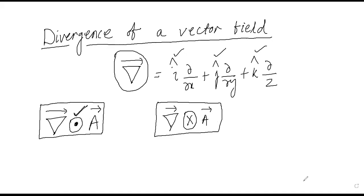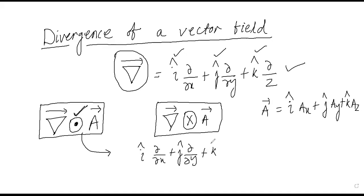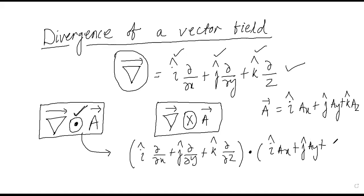Let us write what divergence of a vector field mathematically represents. We know del, and any vector A can be written in terms of its components: i-cap Ax plus j-cap Ay plus k-cap Az. So del dot A is written as (i-cap del/del_x + j-cap del/del_y + k-cap del/del_z) dotted with (i-cap Ax + j-cap Ay + k-cap Az).